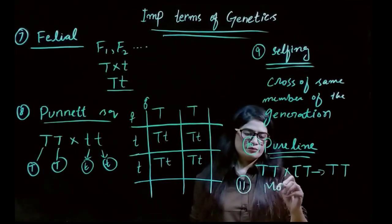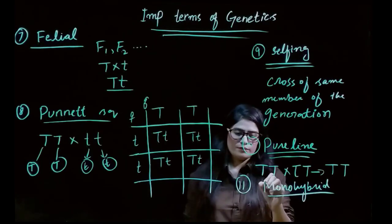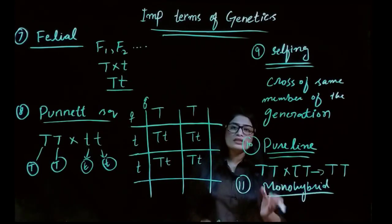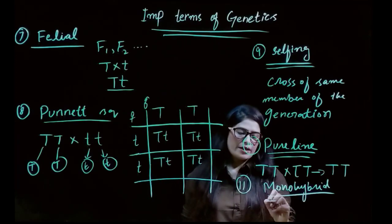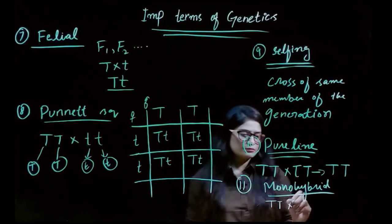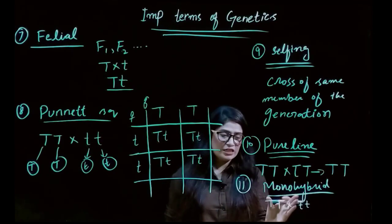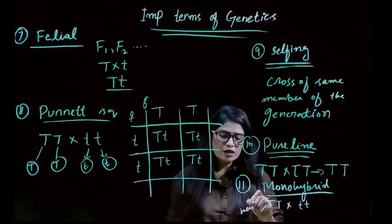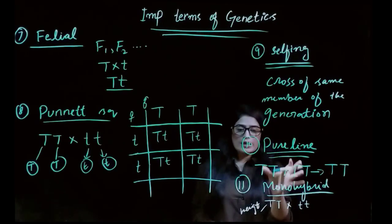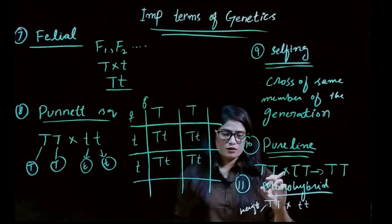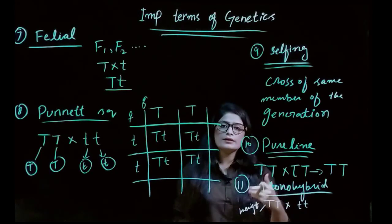The next term is monohybrid cross. 'Mono' means one — when we are checking only one character while crossing two plants. For example, a tall plant crossed with a short plant: we are checking only height. Because we are checking only one character, it is called a monohybrid cross.